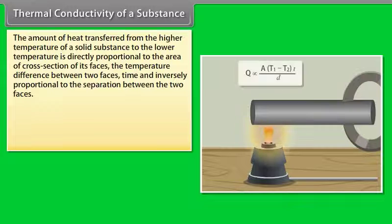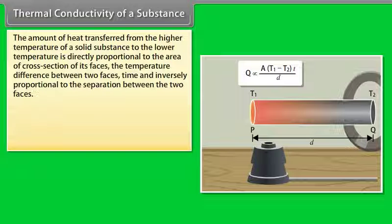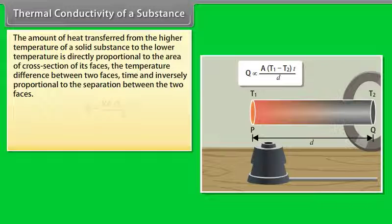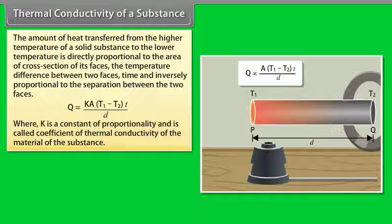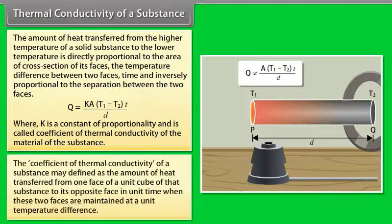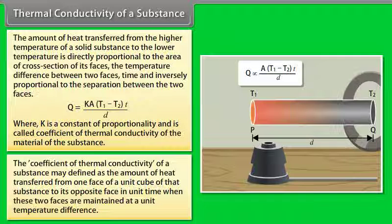The amount of heat transferred through a solid is directly proportional to the cross-sectional area, temperature difference, and time, and inversely proportional to the separation between the two faces. This gives Q = KA(T₁ − T₂)t/D, where K is the coefficient of thermal conductivity. K is defined as the amount of heat transferred through a unit cube per unit time when opposite faces are maintained at a unit temperature difference.